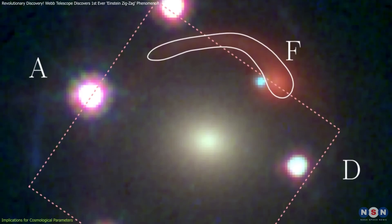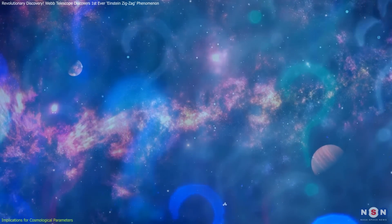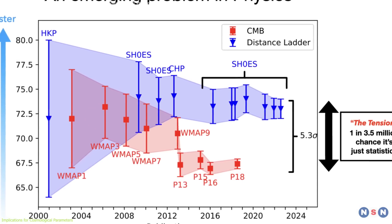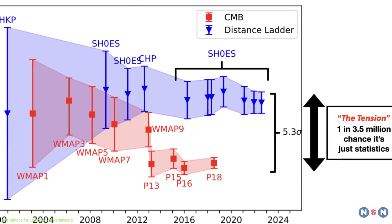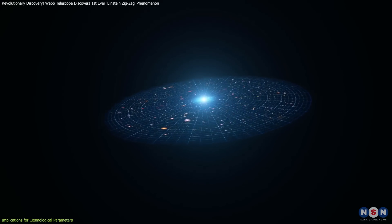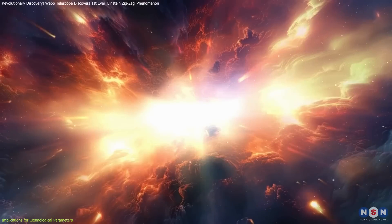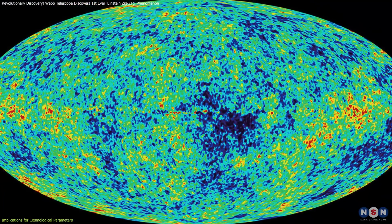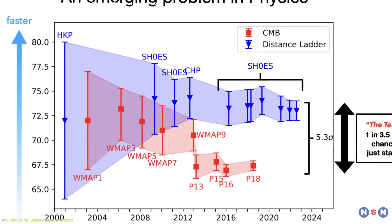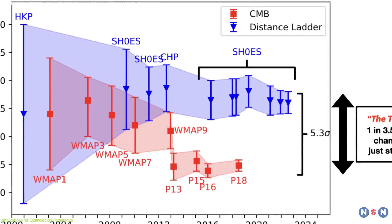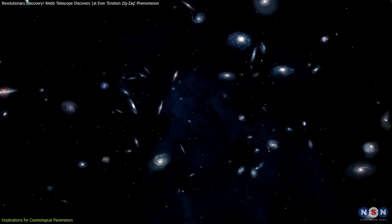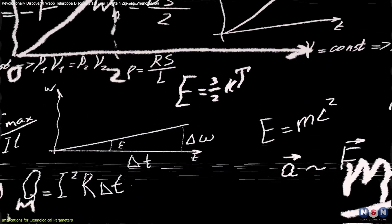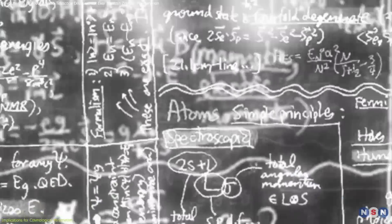The Einstein zigzag discovery offers an exceptional opportunity to tackle some of the most pressing questions in cosmology. Chief among these is the Hubble tension — a persistent discrepancy in measurements of the universe's expansion rate, also known as the Hubble constant. Observations of the early universe, such as those derived from the cosmic microwave background, provide values that differ significantly from measurements based on nearby galaxies, igniting debates among scientists, with theories ranging from measurement errors to the need for entirely new physics.